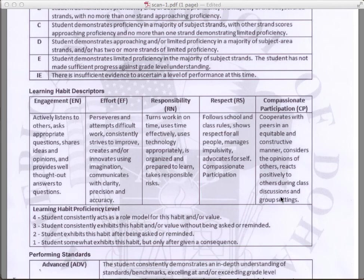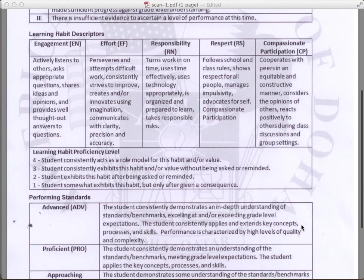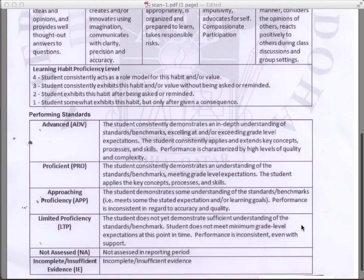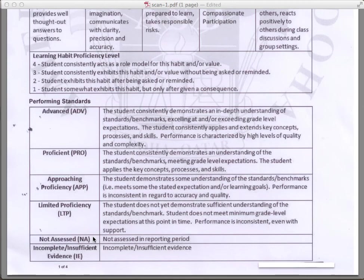The one thing to note is that we use numbers to indicate proficiency. So we'll see a 4, 3, 2, or a 1 listed next to each one of them. For example, a 3 means the student consistently exhibits this habit and/or value without being asked or reminded. And finally, near the bottom of the first page, we have our performance standards: advanced, proficient, approaching proficiency, limited proficiency, something that's not assessed, or incomplete or insufficient evidence.